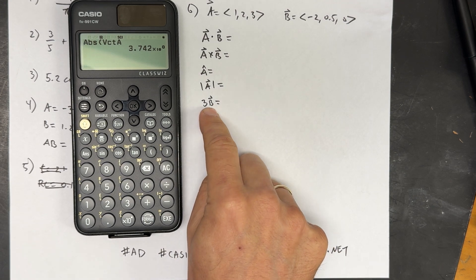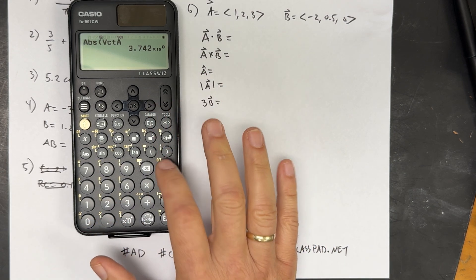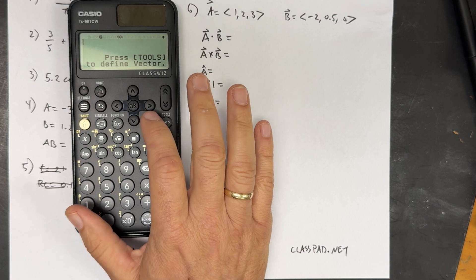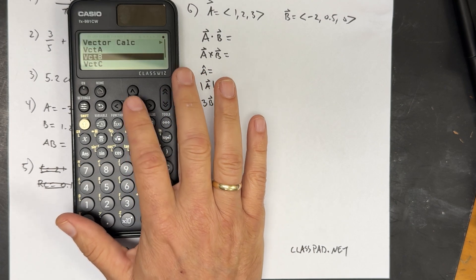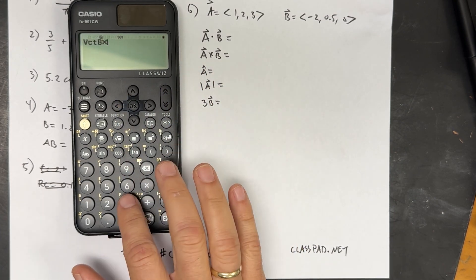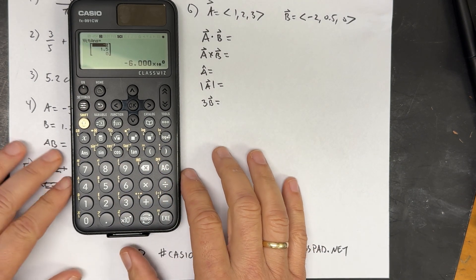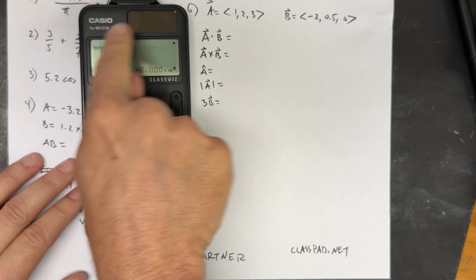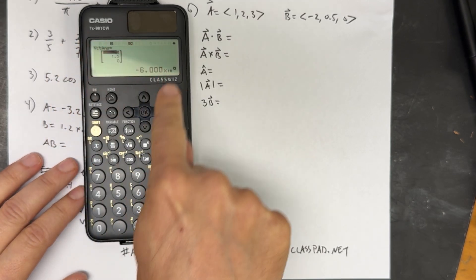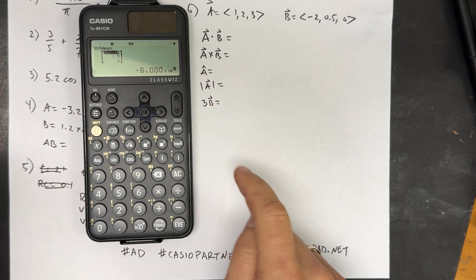And then finally I'm going to do a scalar times vector B. So let's just do clear. Catalog, vector, B. I did it backwards. Times 3. Execute. And there you go. Vector calculations with the Casio FX991CW ClassWiz. Talk to you later. Peace out.